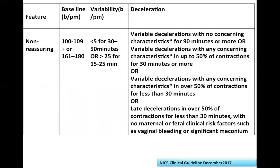The presence of one non-reassuring feature makes the diagnosis a suspicious CTG. Non-reassuring features include: borderline tachycardia of 161 to 180 beats per minute, or borderline bradycardia of 100 to 109 beats per minute.